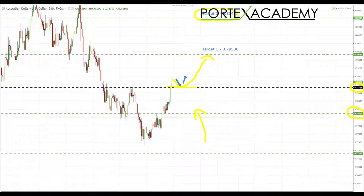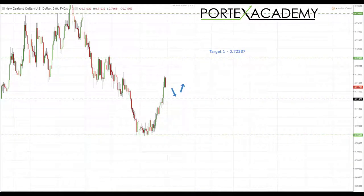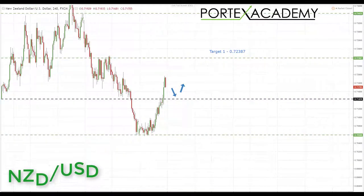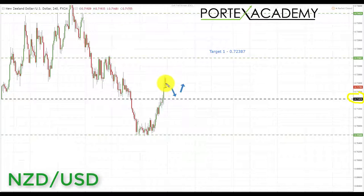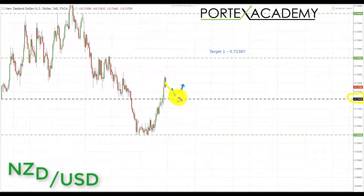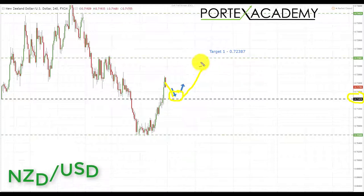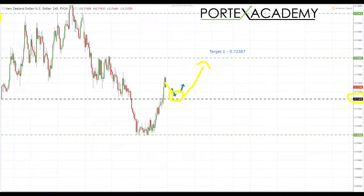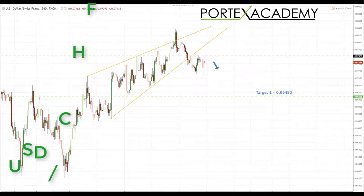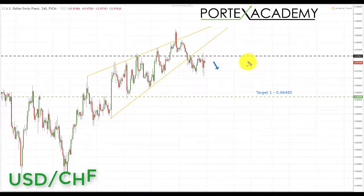Next, looking at NZD/USD — last week it broke above key resistance at 0.71429 without much trouble. The setup going into next week is a pullback and test of broken resistance acting as support, where we'll look for bullish formations and patterns. If we get those, we're targeting 0.72387 on NZD/USD next week.